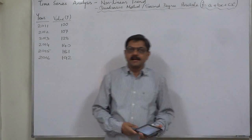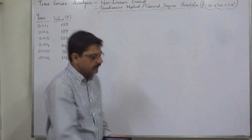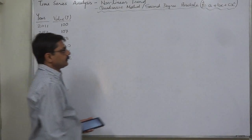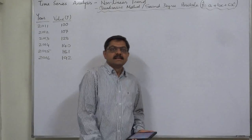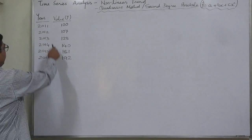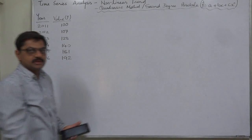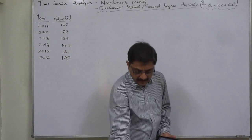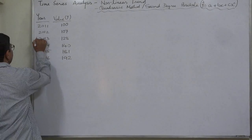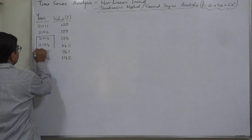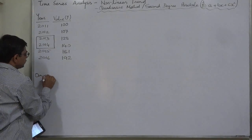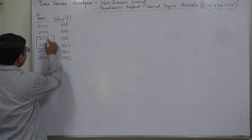Hello and welcome. Namaskar. This lecture covers time series analysis — nonlinear trend using the quadratic method or second degree parabola. This is the second case: a time series with an even number of years — six years. In the case of an even number of years, we take the mean of the two middle years as the origin.